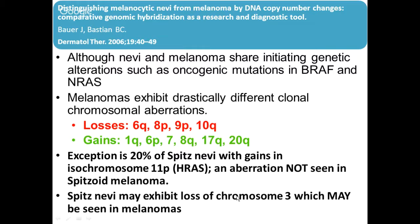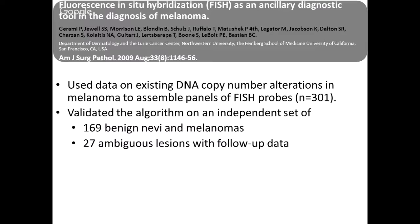Spitz nevi may also exhibit loss of chromosome 3, which may also be seen in melanomas, so it has limited diagnostic value. The Jarami and Bastion group, with all this information, had the idea: can we put together a set of probes — a combination of probes — that can be diagnostic in distinguishing melanoma from benign nevi? They used data on existing DNA copy number alterations in melanoma to assemble panels of FISH probes across 309–301 cases, validated the algorithm on an independent set of 169 benign nevi and melanomas, as well as 27 ambiguous melanocytic lesions with follow-up data.